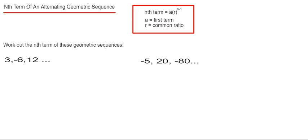Let's have a look at example 1. We've got 3, minus 6, and then 12. So our first term in our sequence is 3. To get the common ratio, we just divide the second term by the first term.